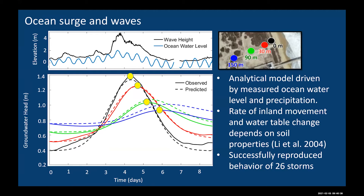We developed a model to describe this propagation process. Practically, this means we can predict the maximum water level within about 10 centimeters following one of these storms, and predict the timing of when you'll see that high water level within about a day. We applied this to all storms in our long time series and felt confident we could reproduce the behavior seen across 26 storm events.